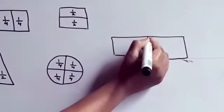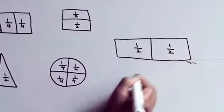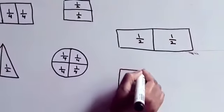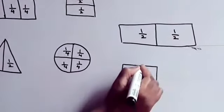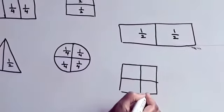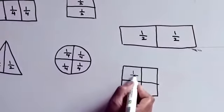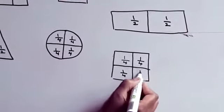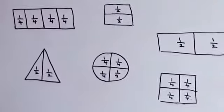Again we are going to make a rectangle and divide it into two equal parts. If we are going to make a square, we divide this square into four equal parts. Do you understand everybody?